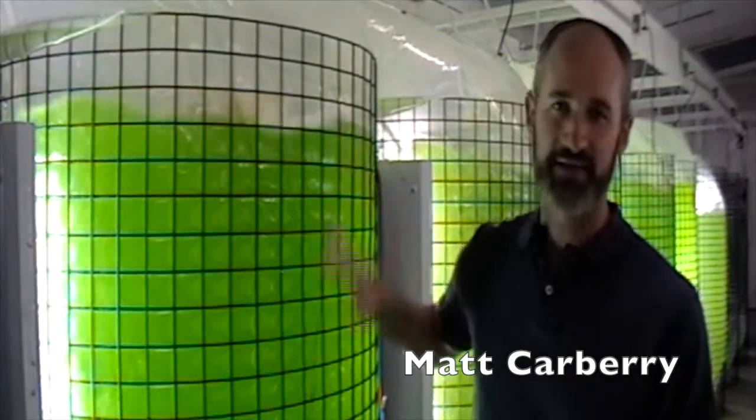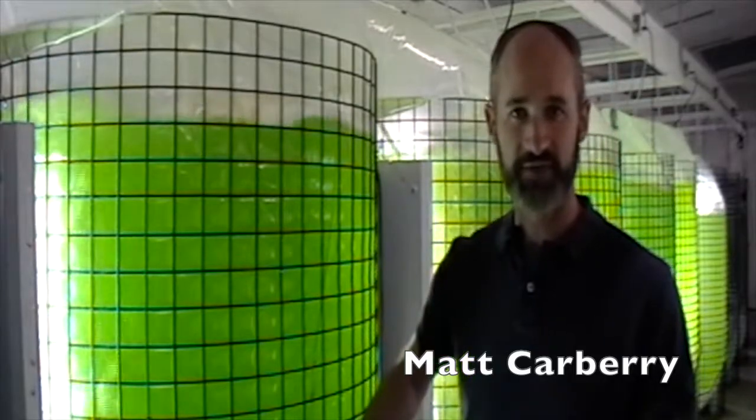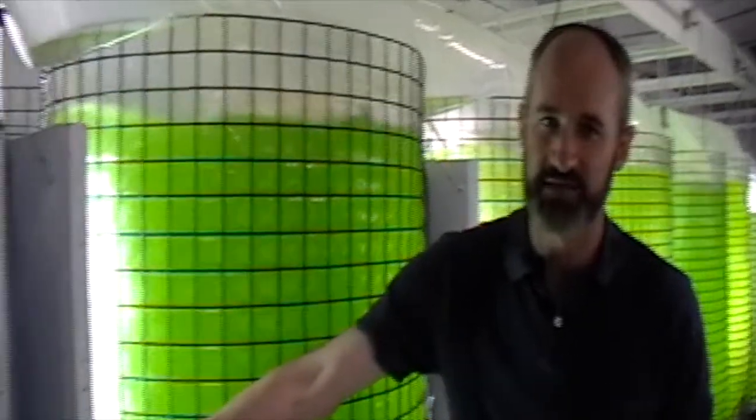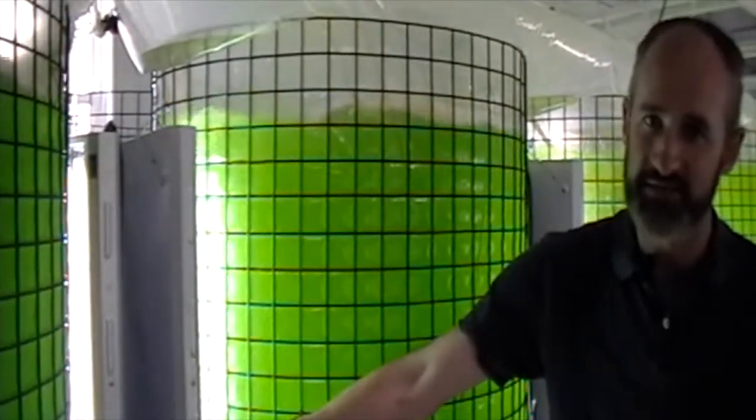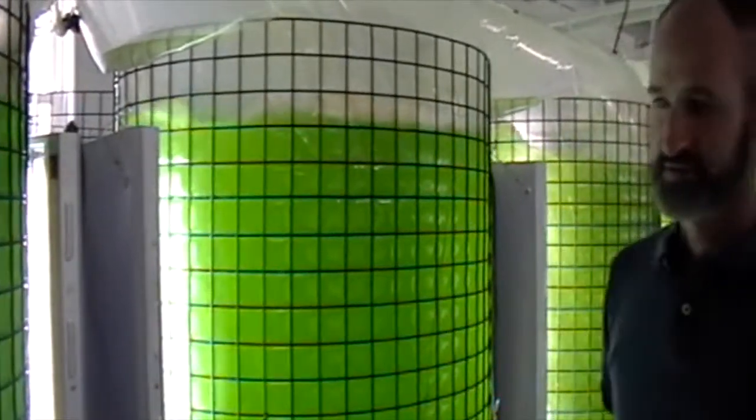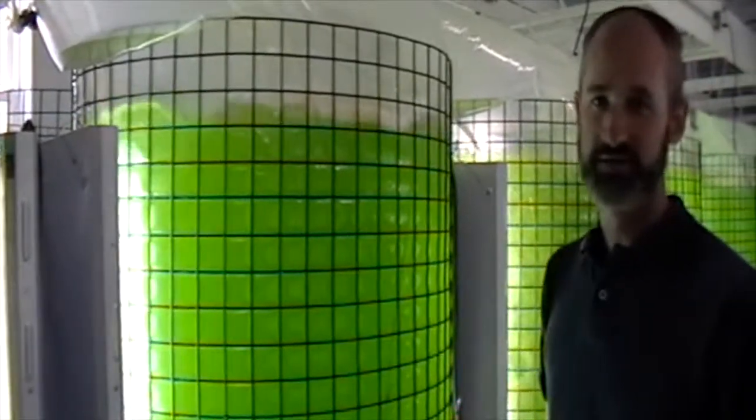This is a plastic liner bag in a metal cage frame. It's lit with T5 fluorescent lights on the side. These lights can be T5 or LED. The important thing is to have enough strength to illuminate the bag and grow the algae.